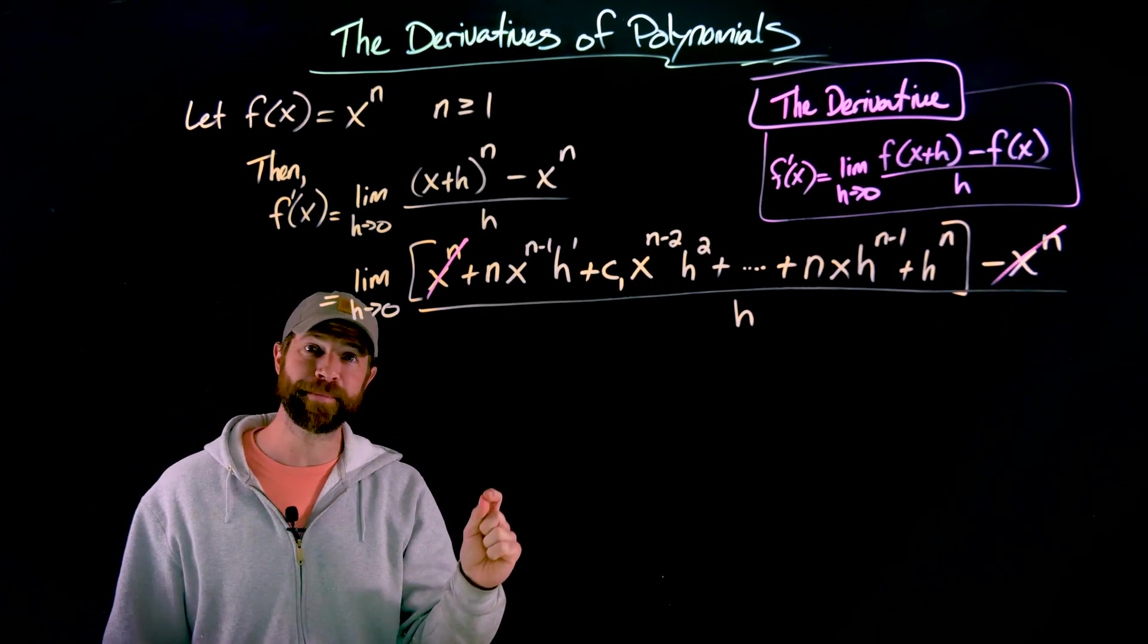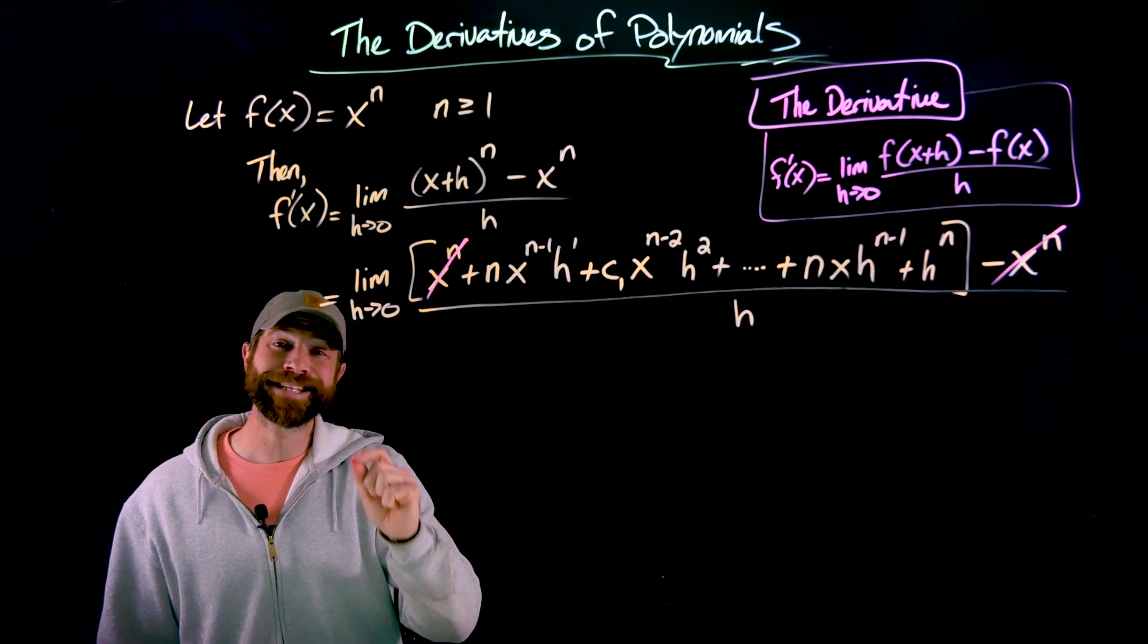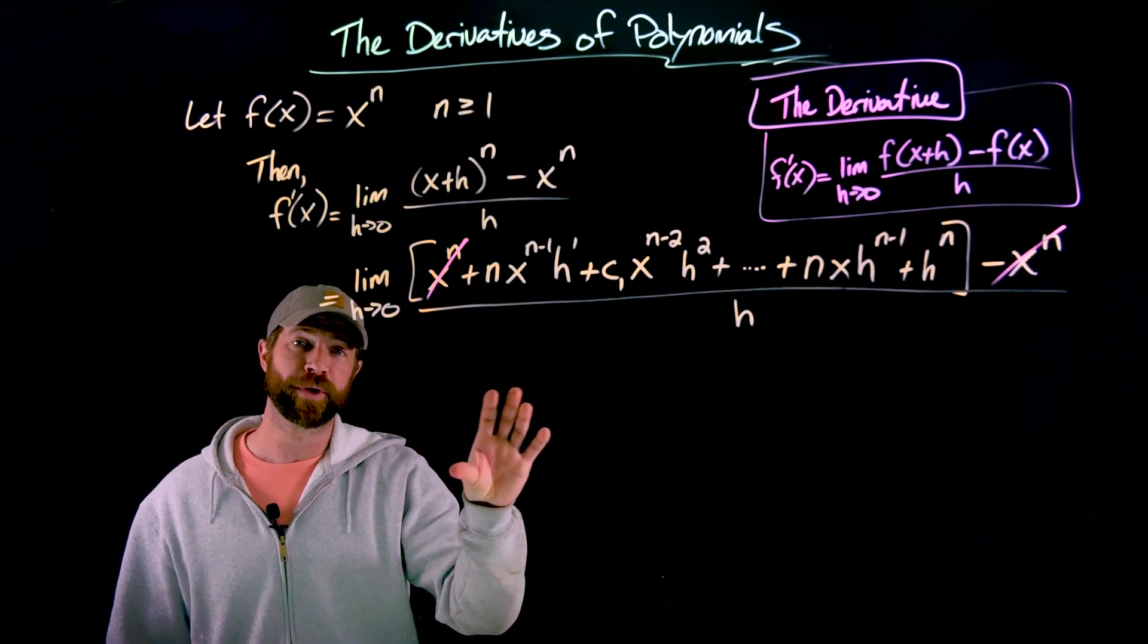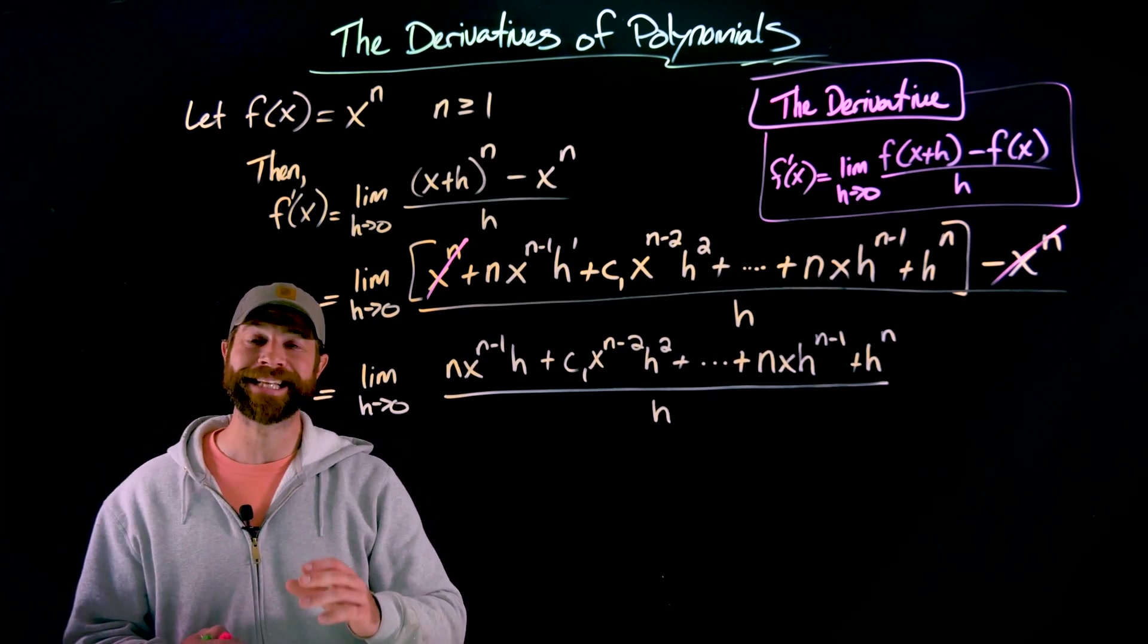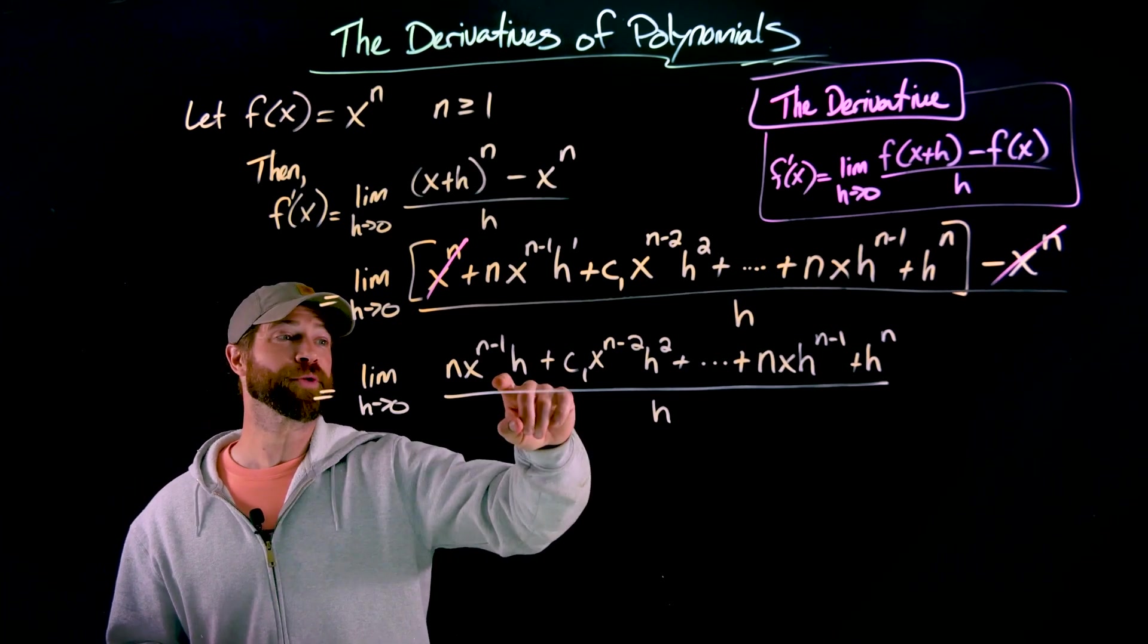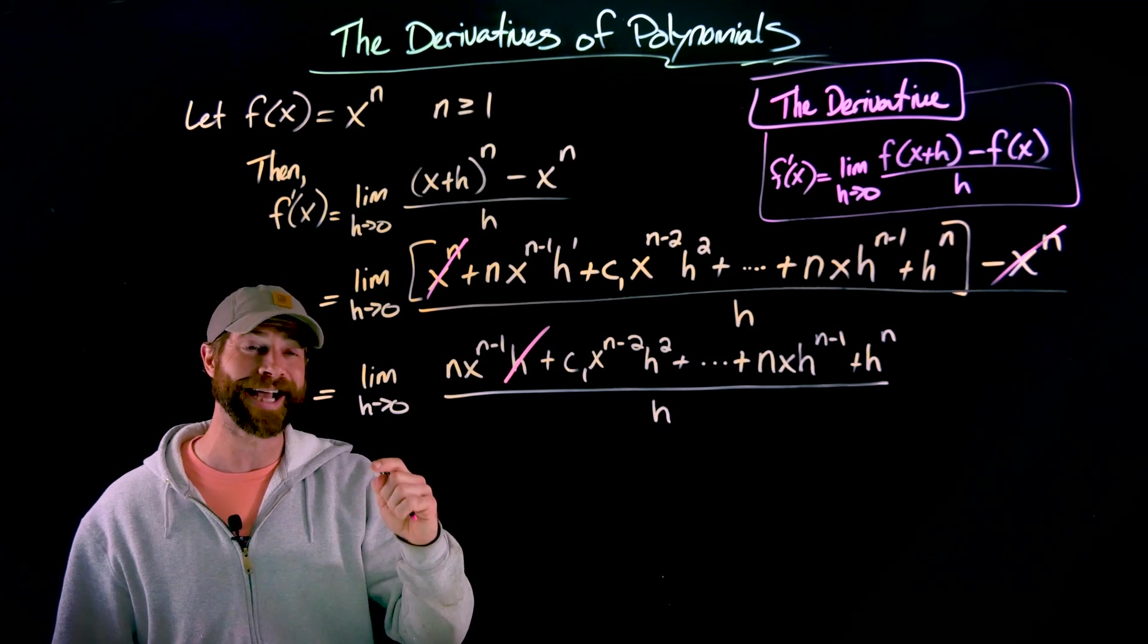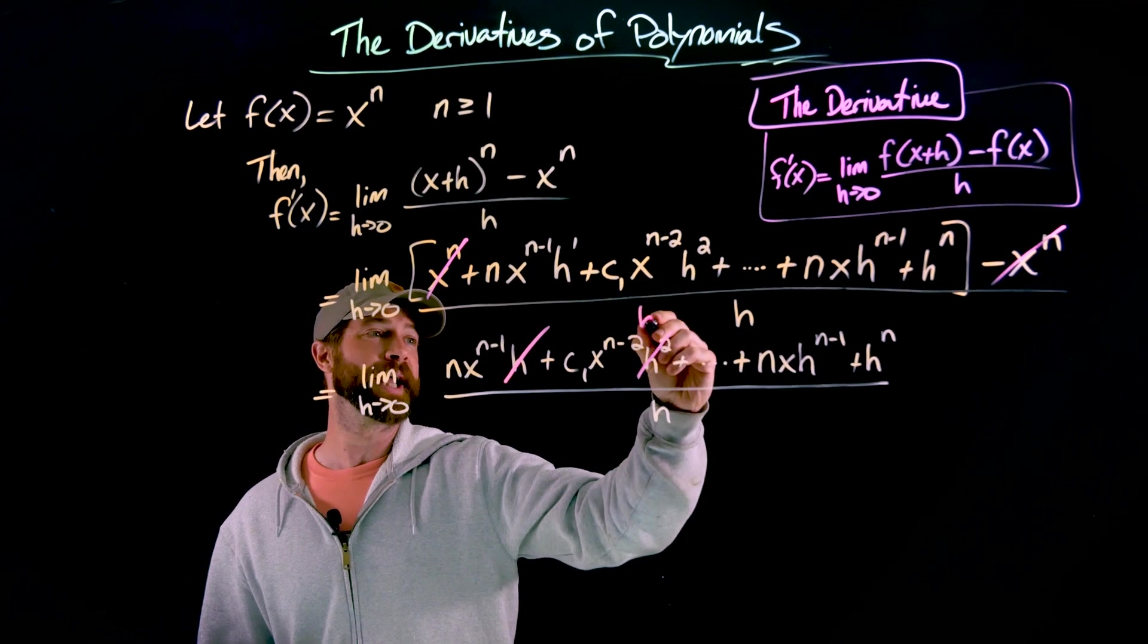Importantly, because of that move right there, I'm now left with an expression in the numerator where every single term now definitely has at least one factor of h that I can cancel with this right here. Let me write this out one more time so I can explicitly do this. Since the only term that didn't have an h is cancelled, I can now cancel a factor of h in the denominator with one h in each of these terms. And watch what happens with the first term here. Since this only had one h to give, I now have no h's in that term. Every other term will have more than just one h, and so we'll cancel those.